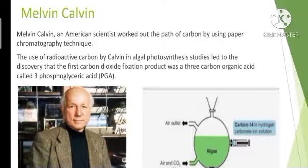He used radioactive carbon, C-14, in algal photosynthesis studies, and the algae he used was Chlorella. His studies led to the discovery that the first carbon dioxide fixation product was a 3-carbon organic acid called 3-phosphoglyceric acid. He also worked out the complete biosynthetic pathway, hence it is called the Calvin cycle. Since the first product was a C3 acid, this pathway is also called the C3 pathway.